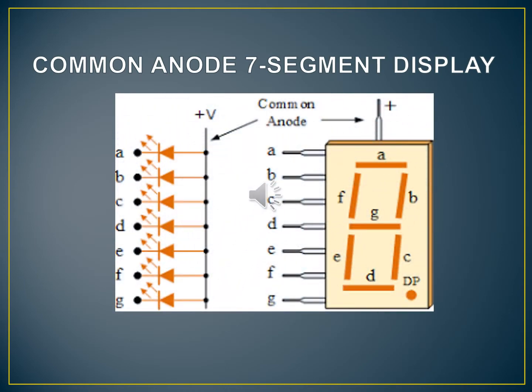And here again we could see that points A to G are connected. A to G are cathode and all the anodes of LEDs are connected together to a common potential. So this is known as common anode.